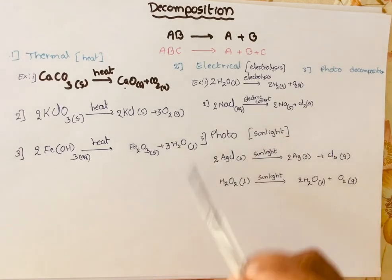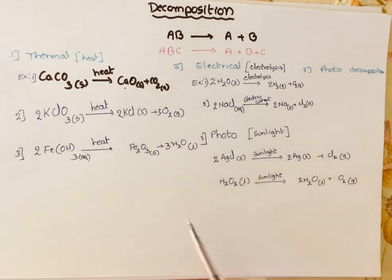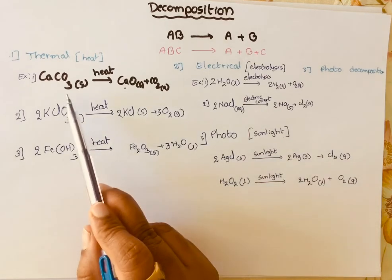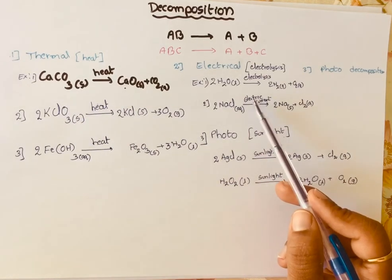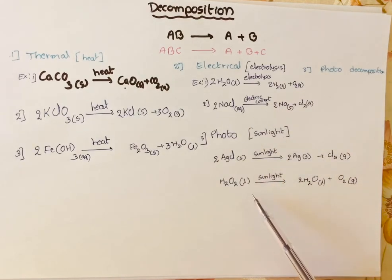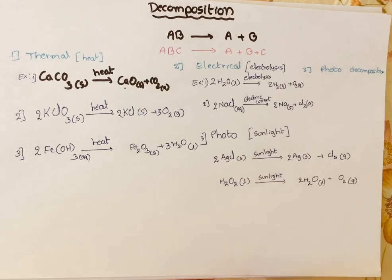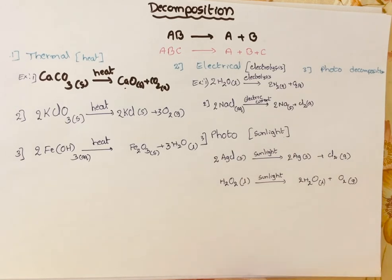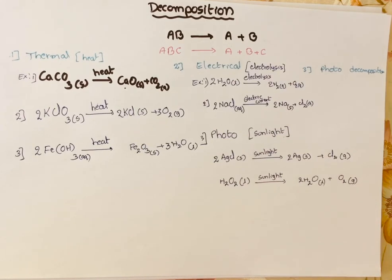In summary, the decomposition of a single compound into simple products is called a decomposition reaction. This dissociation can take place in three ways: thermally, electrically, or photolytically. A compound generally won't decompose on its own — we have to heat it, supply electricity to the solution, or use sunlight to decompose it into simple products.